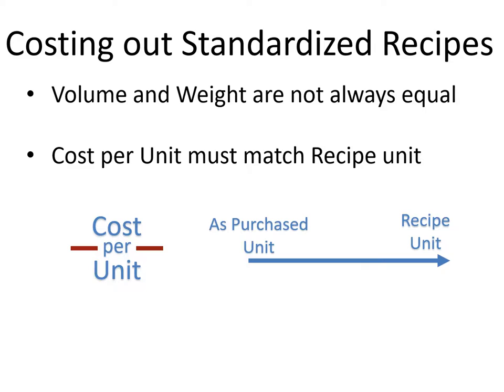Volume is measured in liquid. The one true match between volume and weight is water — 16 ounces of water weighs exactly one pound. But 16 ounces of corn syrup does not weigh one pound; it probably weighs more. So volume and weight are not always equal.